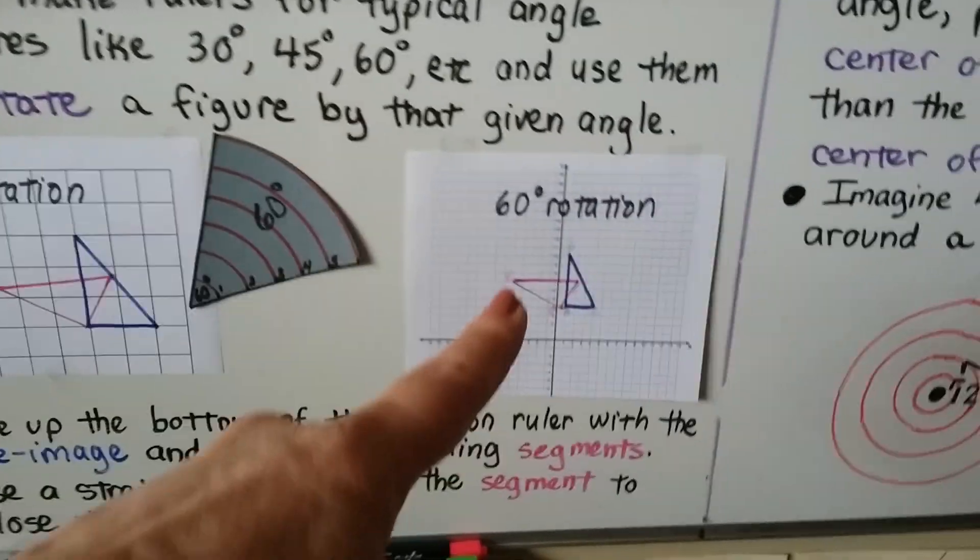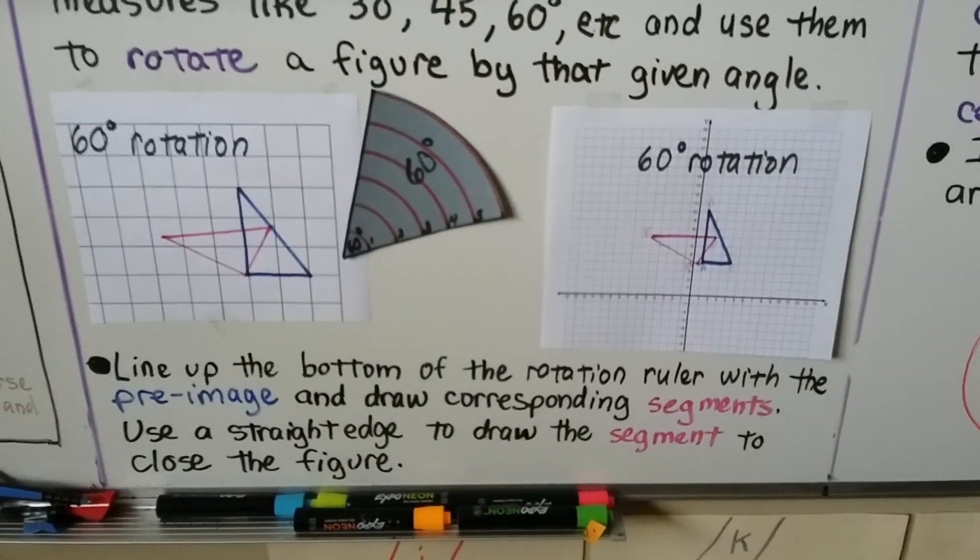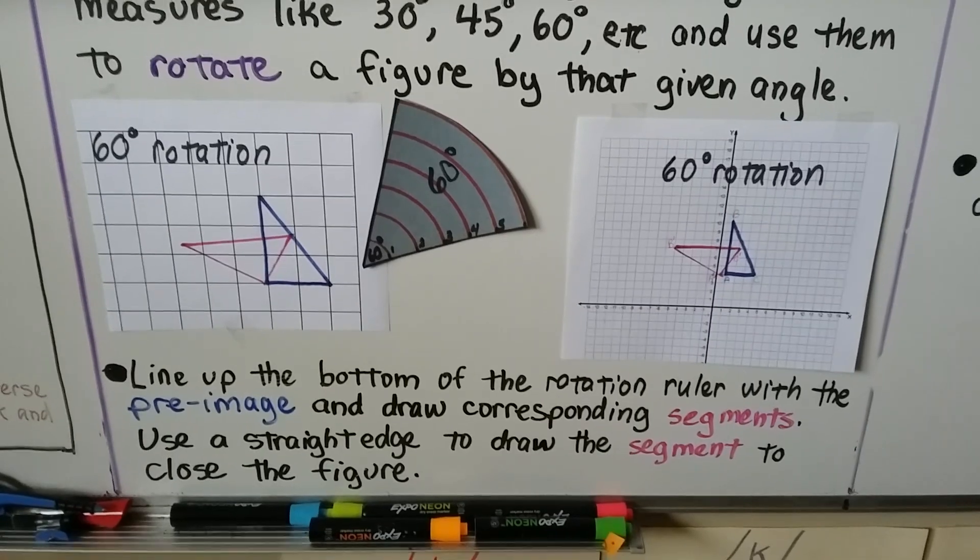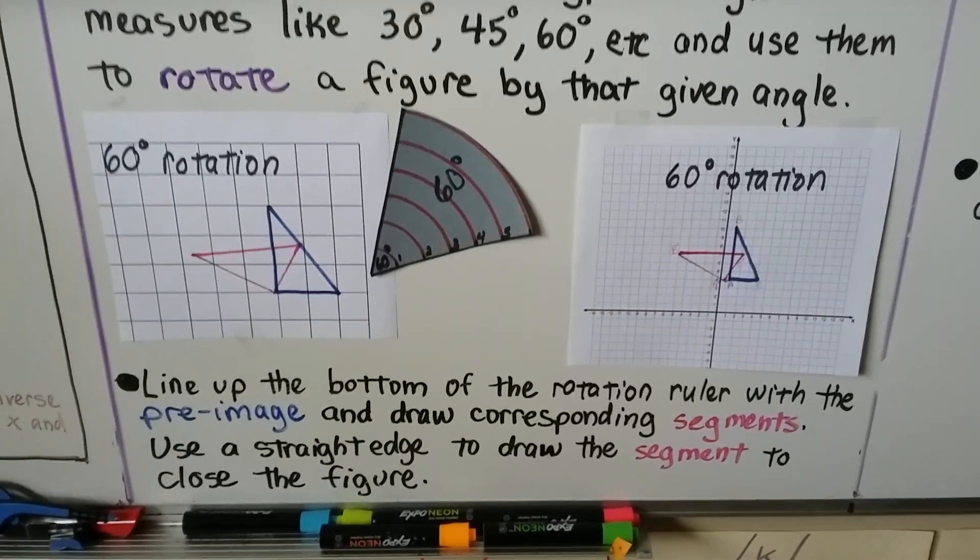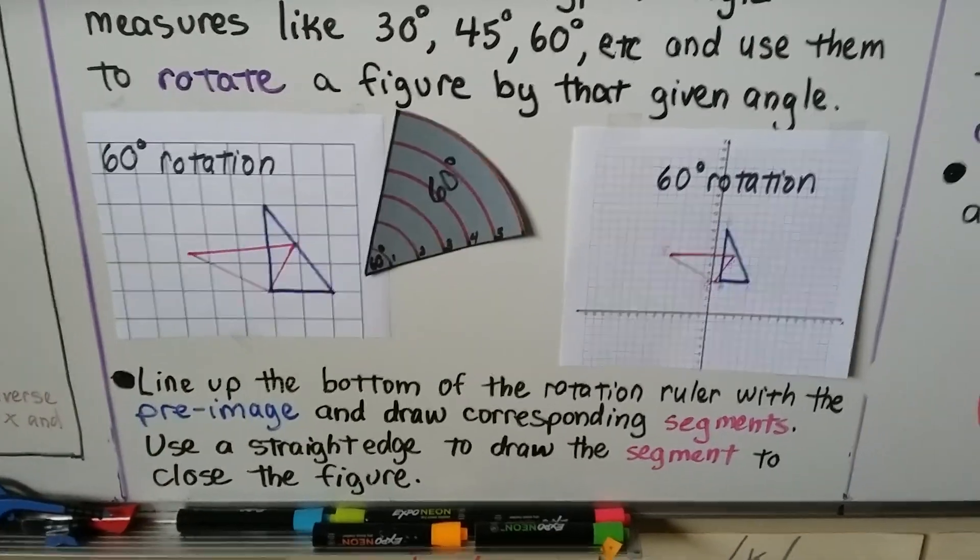And this is what it would look like on a coordinate plane. You just line up the bottom of the rotation ruler with the pre-image and draw corresponding segments. We use a straight edge to draw the segment to close the figure.